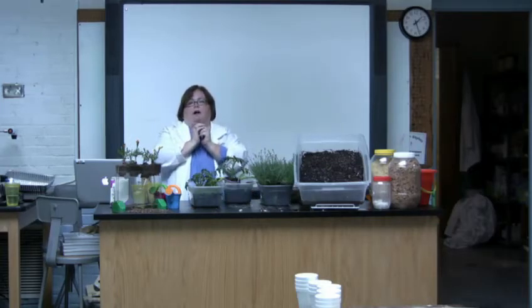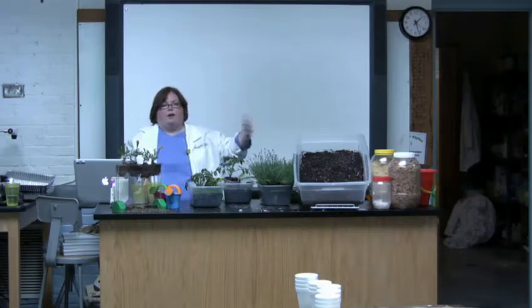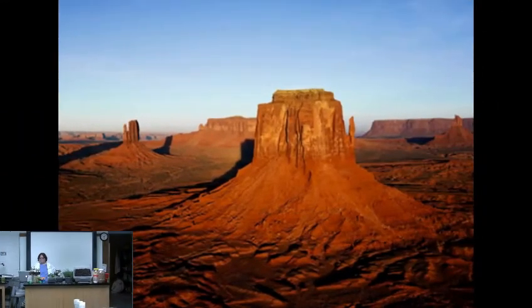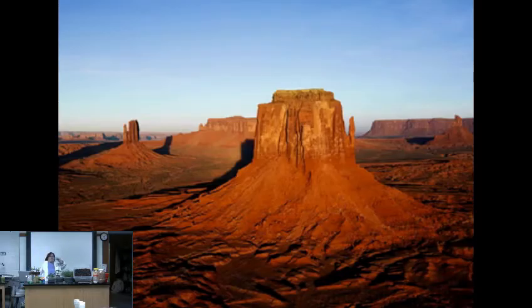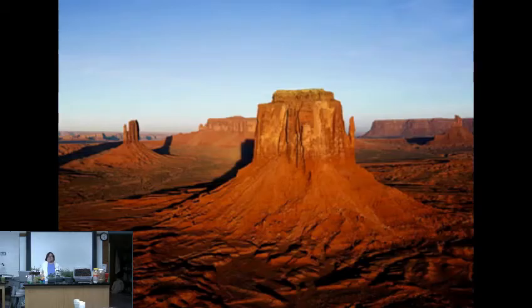To recap: weathering means to break down and wear down rock. Erosion means to carry the weathered particles away. Deposition means the particles build up somewhere — often forming a new landform. Looking at this picture of a butte, you can see where wind has weathered the rock flat on top, where wind has eroded the sand away leaving a flat surface, and where wind has deposited sand in piles at the base of the formation — all three processes visible in one picture.